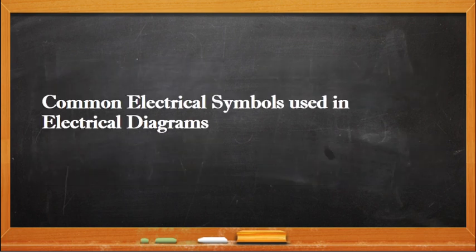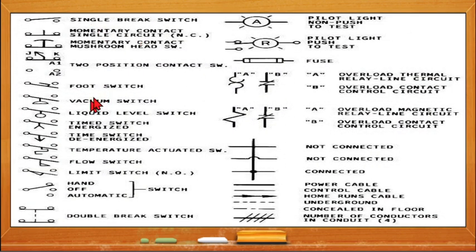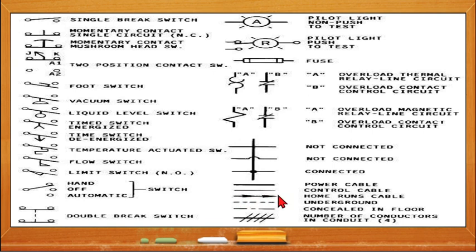These are the common electrical symbols used in electrical diagrams. We have the symbol for a single pole switch and the float switch. For indicators, we have the pilot light. We also have the fuse, overload relays, and wiring symbols — if wires are just crossing without a dot, they are not connected; if there is a dot, those wires are connected or spliced together. Then the power cable is represented by a thicker line, and the control cable by a thinner line. The home run is shown as a line with arrows, and a dashed line means underground or embedded in the ground.